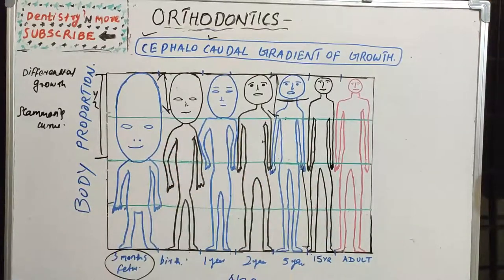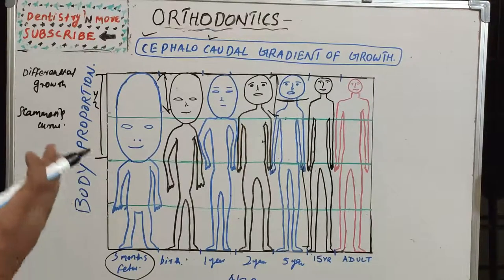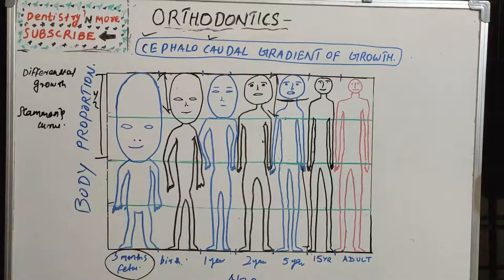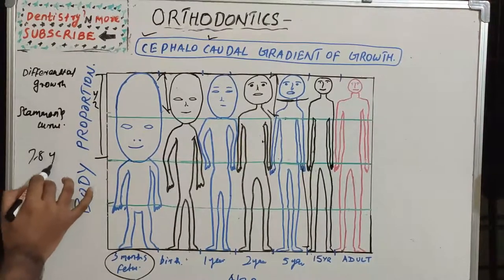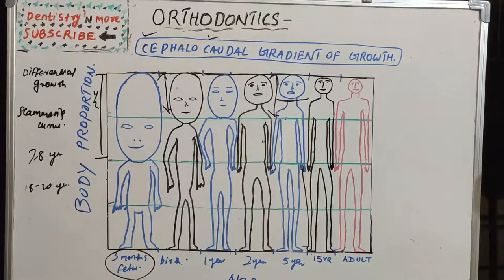In terms of the face, at birth the naso-maxillary complex and mandible are less developed, with the cranium representing more than half of the total head. The maxilla, being closer to the brain, grows faster and its growth is completed before mandibular growth. Maxillary growth completes around 7 to 8 years, whereas the mandible continues to grow until 18 to 20 years. The mandible, being further from the brain, completes its growth later — this is the cephalocaudal gradient applied to facial growth.